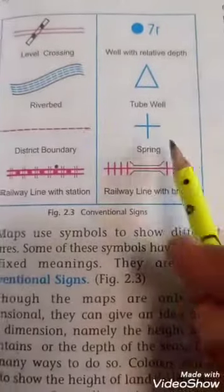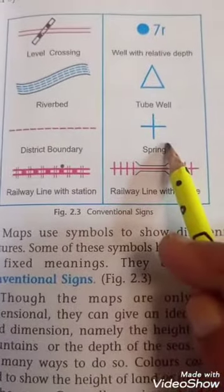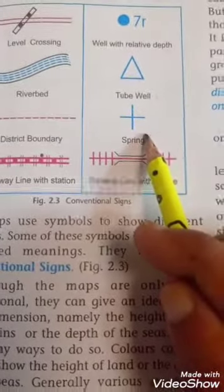Blue color indicates the water area like seas, ocean, rivers, wet tube, well and this.